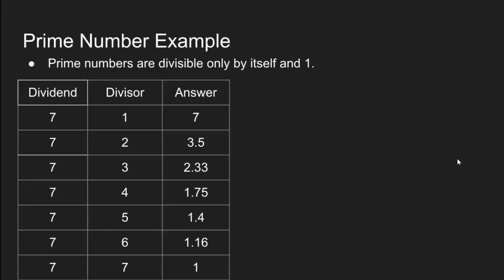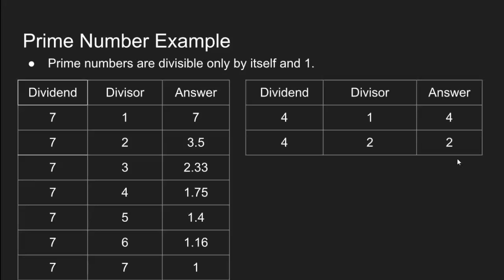Let's take four as another example. Four divided by one gives you four. Four divided by two gives you two. As four is perfectly divisible by two, we end our calculation at this point and we can say that four is not prime. This sums up all the logic behind prime numbers.